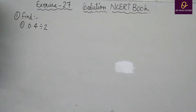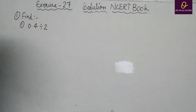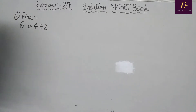Hello everyone, good morning to all. Today we will discuss Exercise 2.7 solution of the NCERT book. In this exercise we will discuss division of a decimal number by another decimal number, or it may be any whole number, or divided by any number which contains 0 after 1.